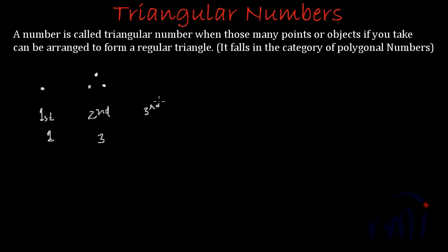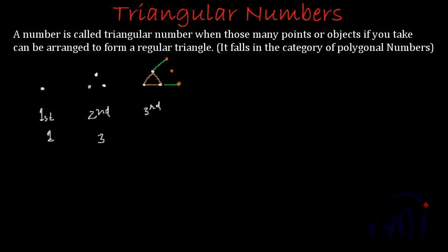What about the third triangular number? To find the next triangular number you take the previous triangular number which you already have — the second triangular number. If I talk about the two adjacent sides of this triangle, the next step is to increase one point each on these sides. So if I increase by one point in this direction and one point in this direction, I will have an angle. But this originally was a triangle, so to convert this angle into a regular triangle I have to put one more dot here.